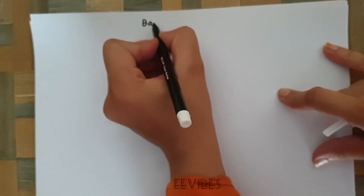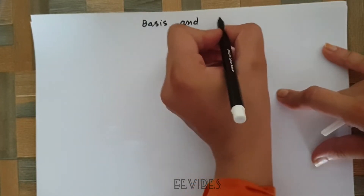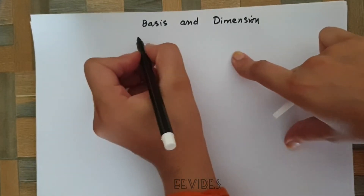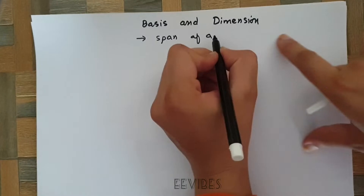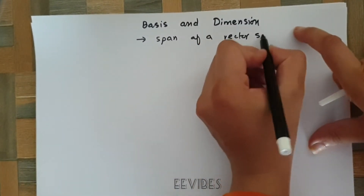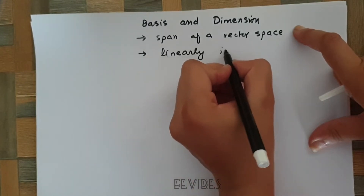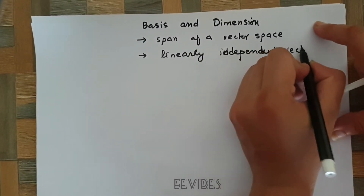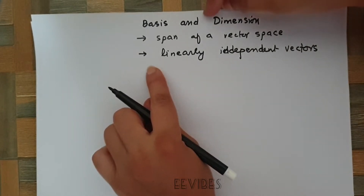Hi guys, this is Asma Mushtaq from the Double E Wipes. In today's lecture I will explain a very important and interesting topic of linear algebra: basis and dimensions. In order to understand basis and dimensions, you must first have knowledge of what the span of a vector space is, and second, what linearly independent vectors are. Once you are familiar with these two things, you can easily determine what the basis and dimensions are.